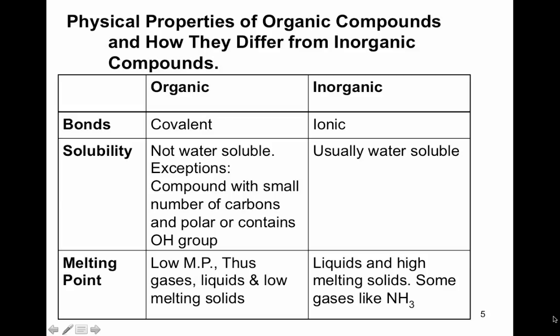Ionic compounds are usually water-soluble. Organic compounds tend to have low melting points, so they tend to be gases, liquids, and low melting solids, while inorganic compounds are typically liquids and high melting solids. There is one inorganic compound, NH₃, that is a gas. Ammonia is not considered an organic compound because it doesn't contain carbon.